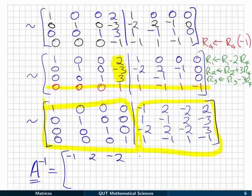So it's minus 1, 2, minus 2, 2, 1, minus 1, 2, minus 3, minus 2, 2, minus 2, 3, and 1, minus 1, 1, minus 1. So that's your inverse matrix.